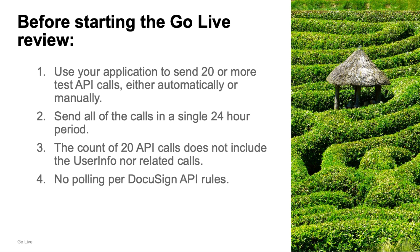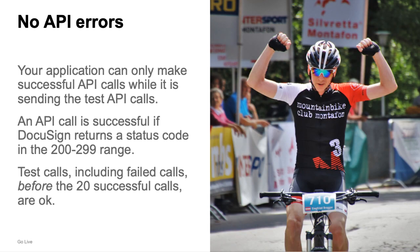Before starting the GoLive review, use your application to send 20 or more test API calls, either automatically or manually. Send all of the calls in a single 24-hour period. API calls to user info or related API methods don't count towards the set of 20 API calls, and no polling per the DocuSign API rules. Each of the calls must complete successfully. An API call is successful if it returns a status code in the 200 to 299 range.